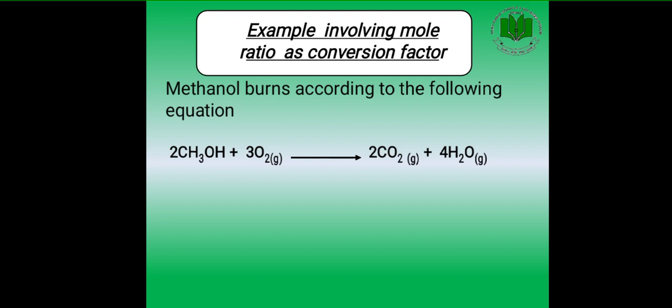CH₃OH is the formula for methanol. O₂ is the molecular formula for oxygen. Both products of this combustion are carbon dioxide and water. Please kindly focus on this balanced chemical equation, because the conversion factor or mole ratio which you have to find comes from the balanced chemical equation. In this equation, 2 moles of methanol (CH₃OH) are reacting with 3 moles of oxygen to give 2 moles of carbon dioxide and 4 moles of water.